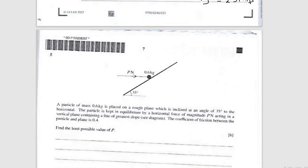Question 5. Before going to the question, let me complete the diagram. The force P N on the particle is tilted — not properly placed. The incline angle is 35 degrees. You have to resolve force P: vertically P sin 35 (downward component) and horizontally P cos 35 (inward component).